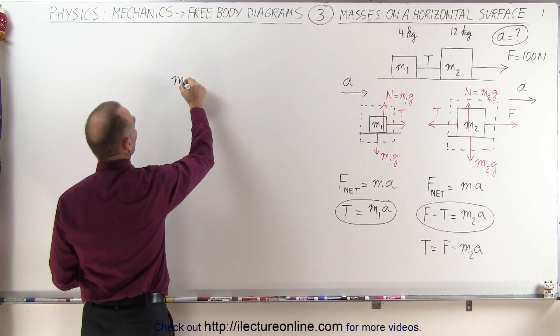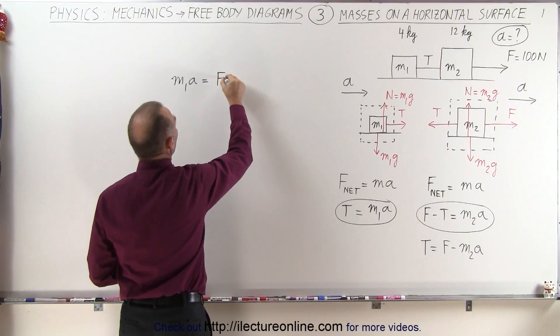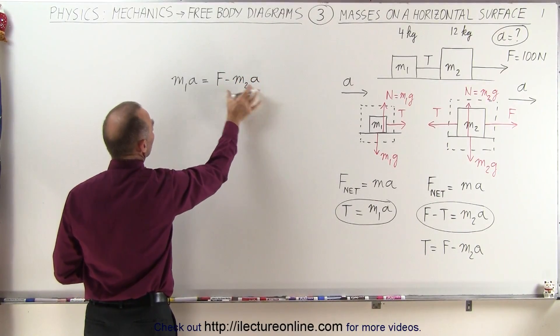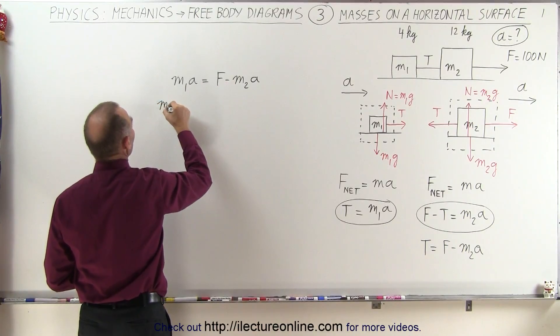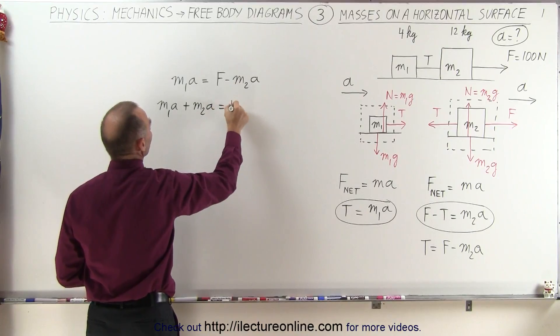So we can say that m1a is equal to F minus m2a, and so what we can do here is move all the terms with an a to the left side. We have m1a plus m2a equals F.